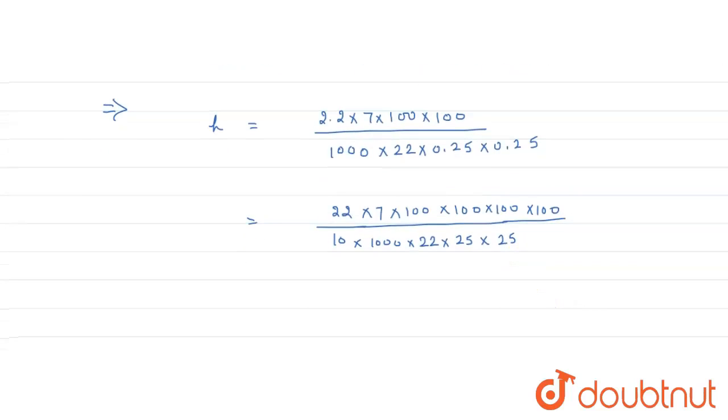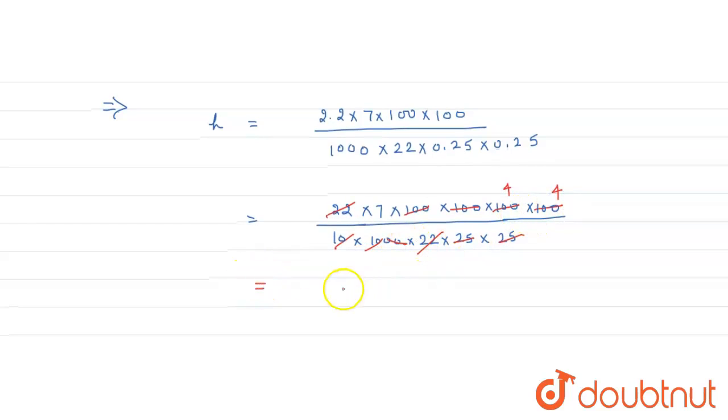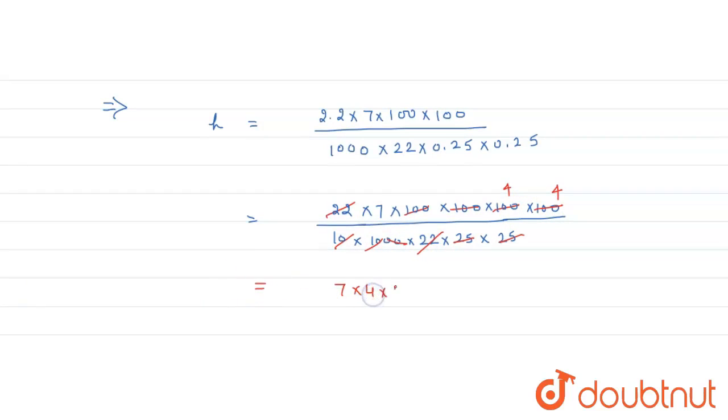Now simplify, cancel out 22 and 22, from 100 to 0, again 200 and 20, 25 from 100, 25 from 100. Now if we multiply 7, 4 and 4, we get 112 meter.